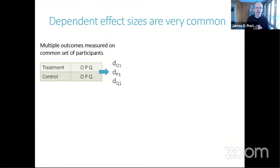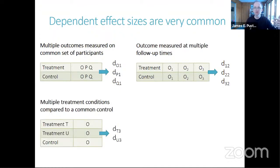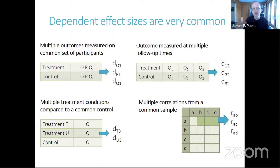If you've ever done a research synthesis, this will sound familiar. Dependent effect sizes are a very common issue, especially in large-scale syntheses in the social sciences, also in some of the biological sciences. Dependent effect sizes arise for a number of reasons, including if you have multiple outcomes measured on a common set of participants, an outcome measured over multiple follow-up times, multiple treatment groups compared to a common control condition, or in correlational syntheses, if you're extracting multiple correlations estimated from the same sample. The problem is that it's often difficult to get information about the extent of dependence between the effect sizes.